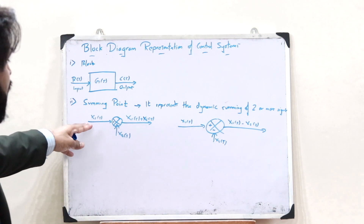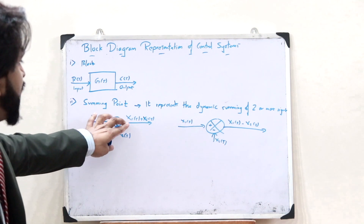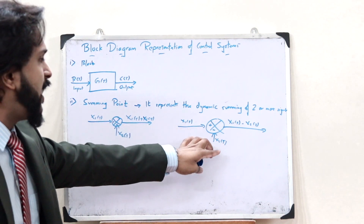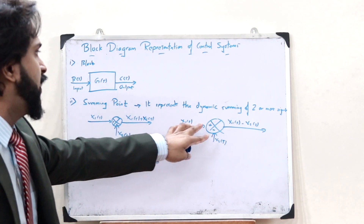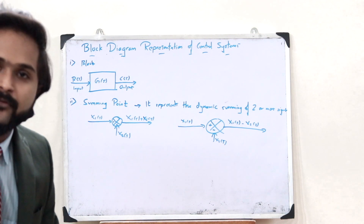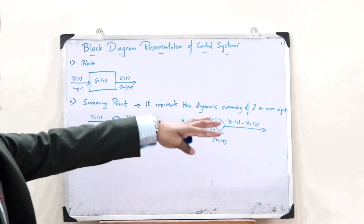Either two signals can be dynamically added together or subtracted. The summing point is used for the purpose of dynamic summing of two or more signals — as simple as that.